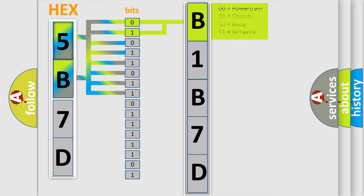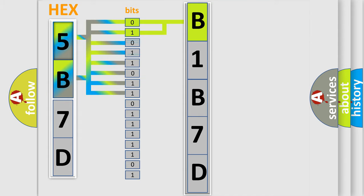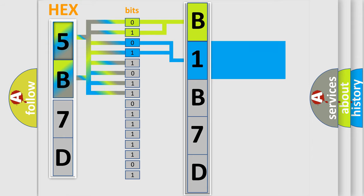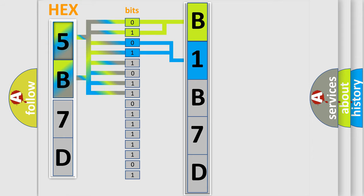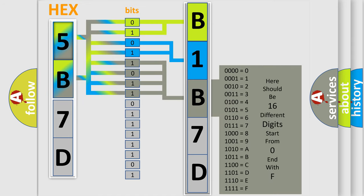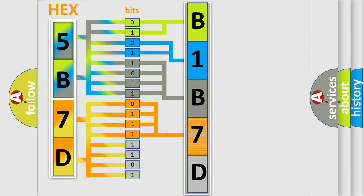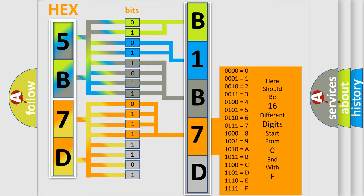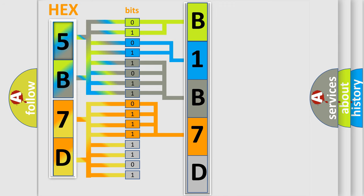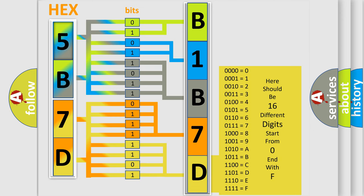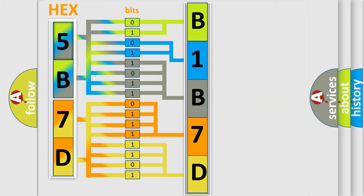By combining the first two bits, the basic character of the error code is expressed. The next two bits determine the second character. The last bits of the first byte define the third character of the code. The second byte is composed of a combination of eight bits. The first four bits determine the fourth character, and the combination of the last four bits defines the fifth character. A single byte conceals 256 possible combinations.